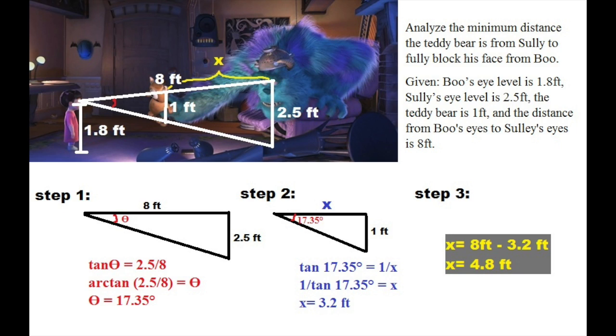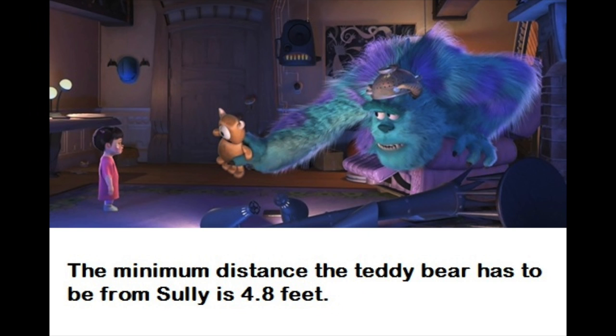Next, solve for the x in the second triangle. You get tangent of 17.35 degrees equals 1 divided by x. Once you solve, you find that x equals 3.2 feet. Finally, you will subtract the two distances from the triangles. 8 feet minus 3.2 feet equals 4.8 feet. So the minimum distance the teddy bear has to be from Sully is 4.8 feet.